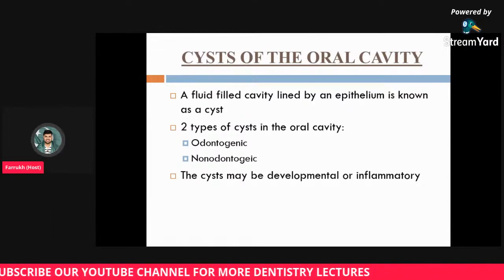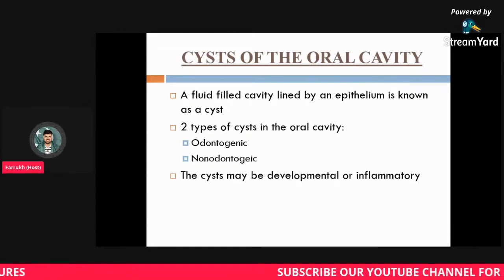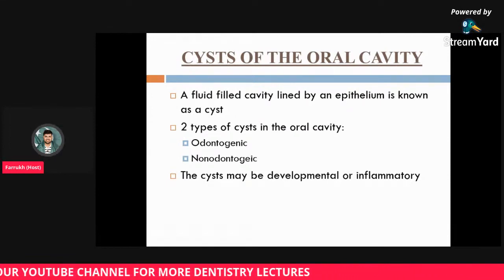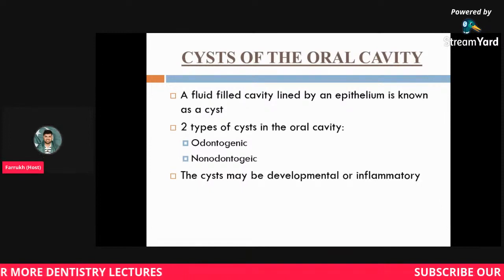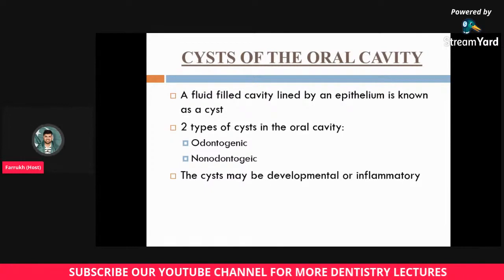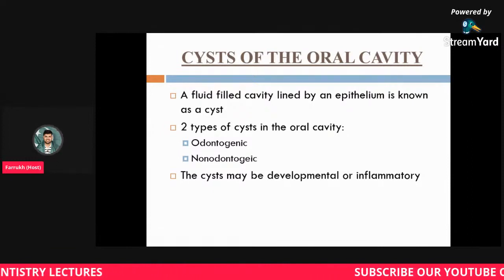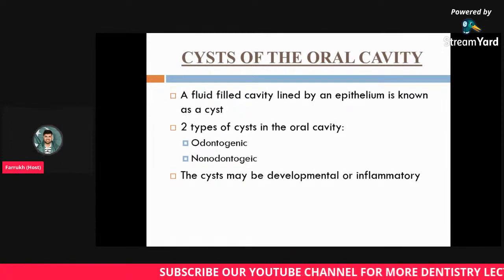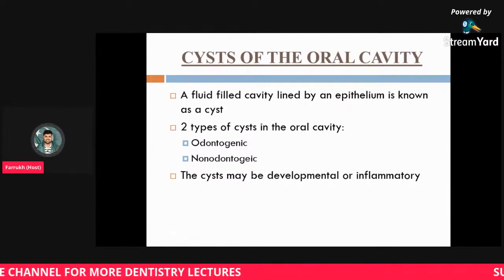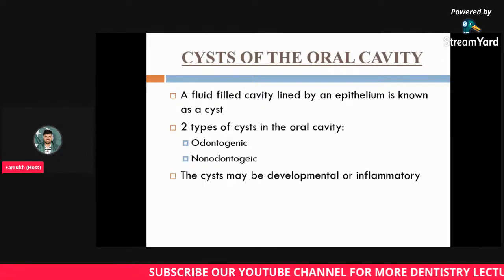What is the definition of a cyst? This is commonly asked by examiners. A cyst is a fluid-filled cavity lined by an epithelium. There is a cavity which is fluid-filled and it is lined by epithelium — that is the definition of a cyst. There are two types of cysts in the oral cavity: odontogenic and non-odontogenic, differing based on their source of derivation. Cysts may also be developmental or inflammatory.